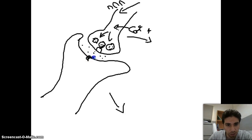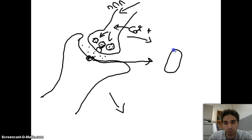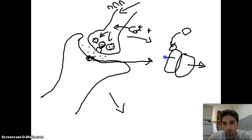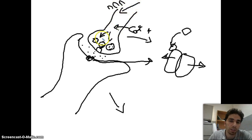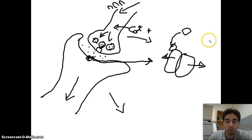These neurotransmitters will attach to receptors specific to them — it's like the lock and key model. They attach to special proteins, or more specifically, special channels. So we have a channel that is closed; the neurotransmitter will come, attach to the channel, and cause it to open. Whatever is specific to that channel will then rush in or rush out.